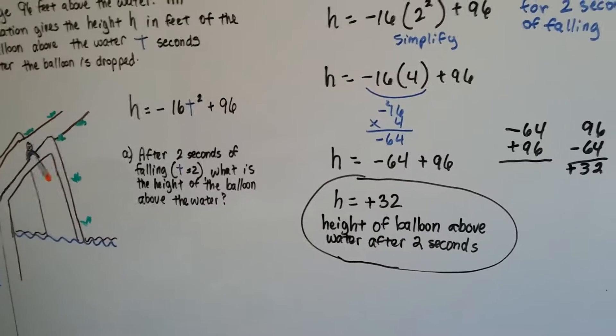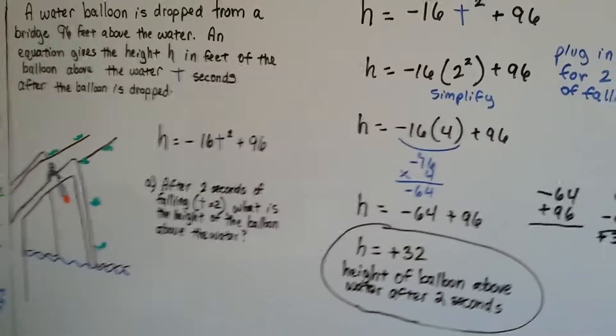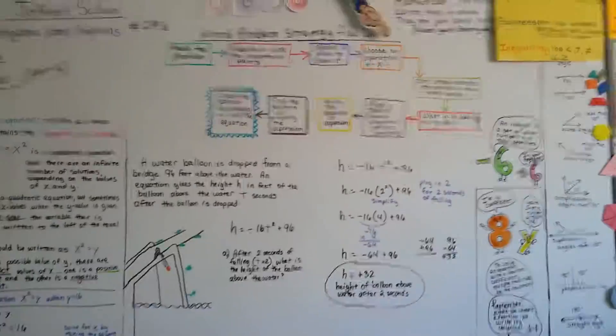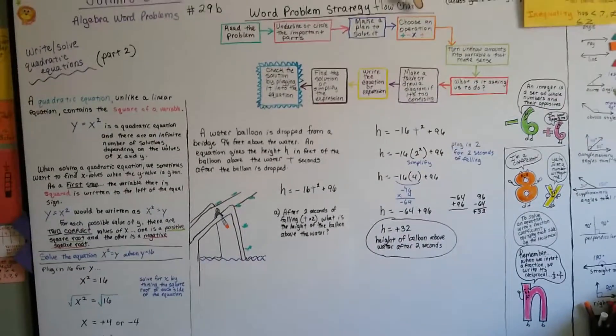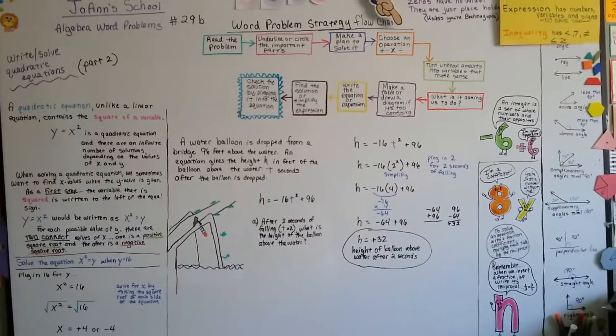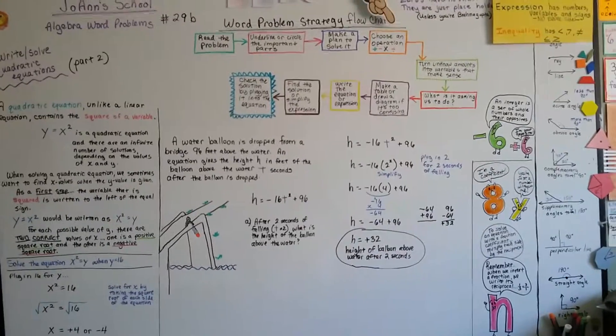Wasn't that simple? All right, I'm going to do another one where we have to square each side of the equal sign. And that's going to be number 29c. I hope to see you there. Bye.